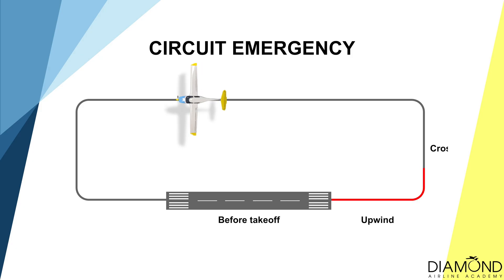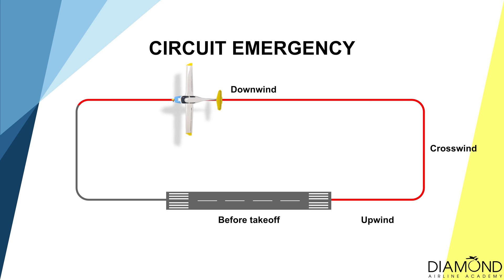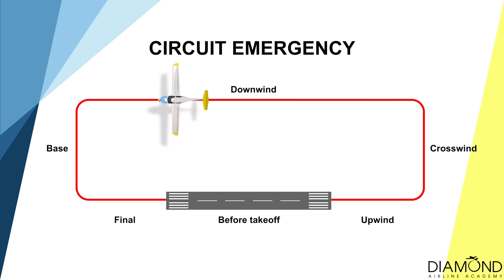In this episode, all of the emergency scenarios we will be practicing will be within the circuit. The emergency procedures for engine failures are not the same — it depends on the position of the aircraft within the circuit. Prior to take-off, a take-off safety briefing was given, to remind ourselves what actions to be taken at different stages of a circuit in an unlikely event of an engine failure.